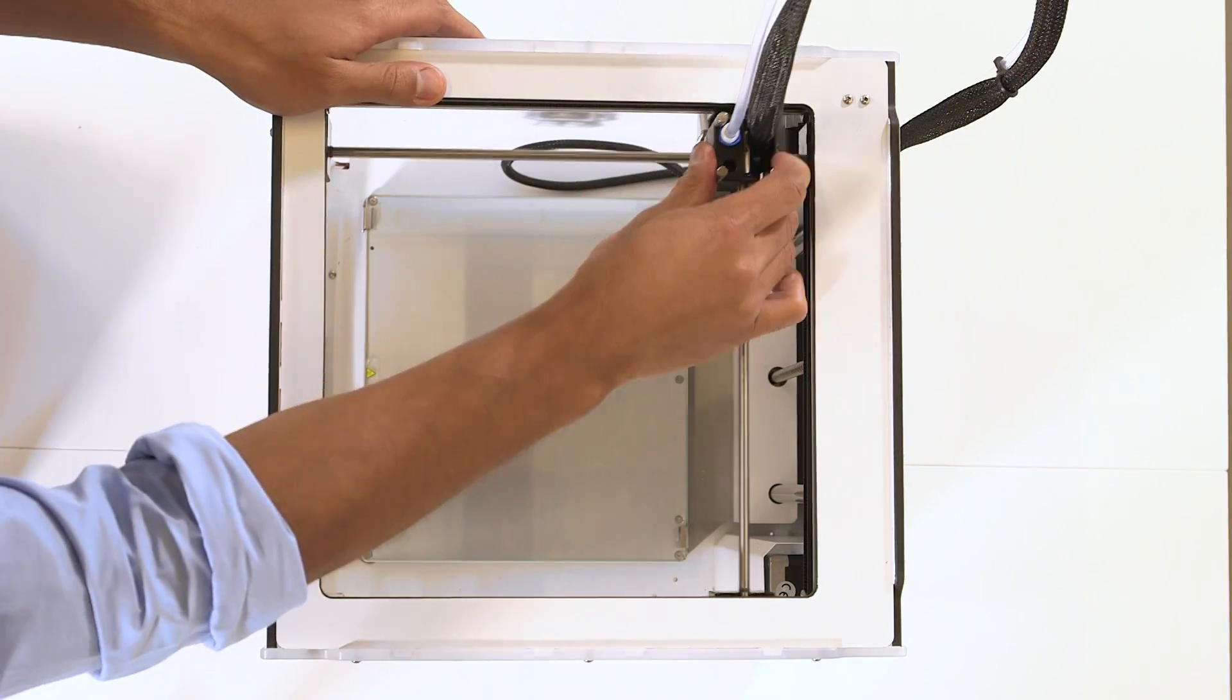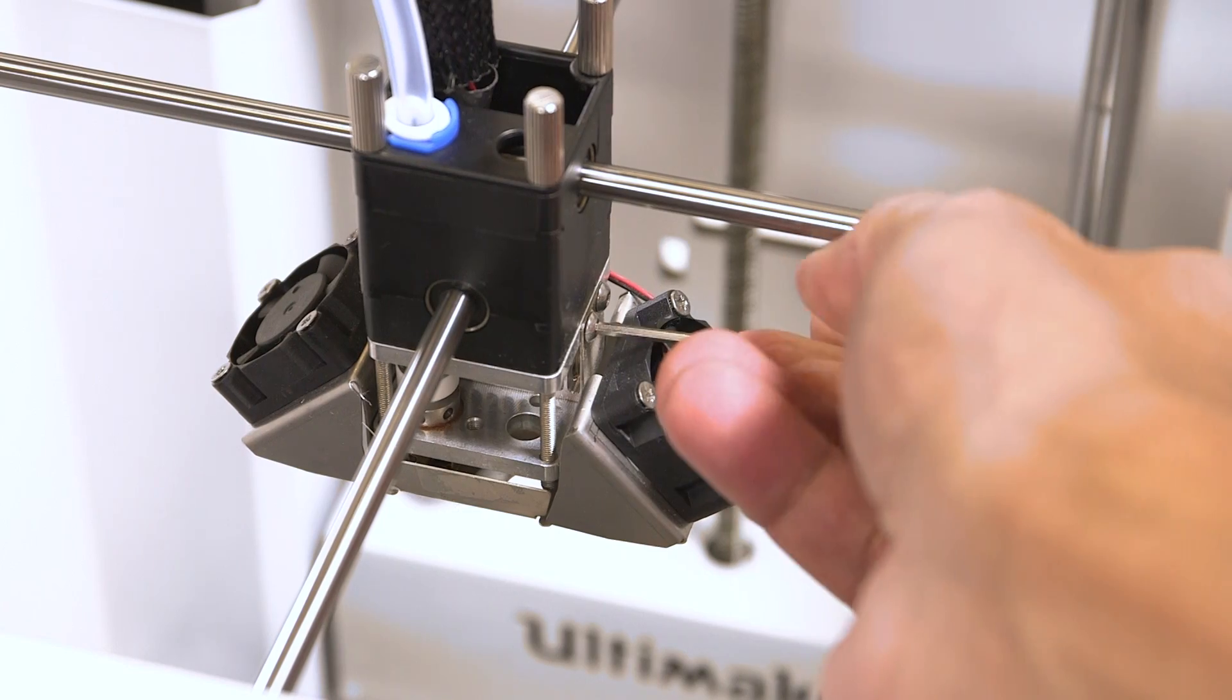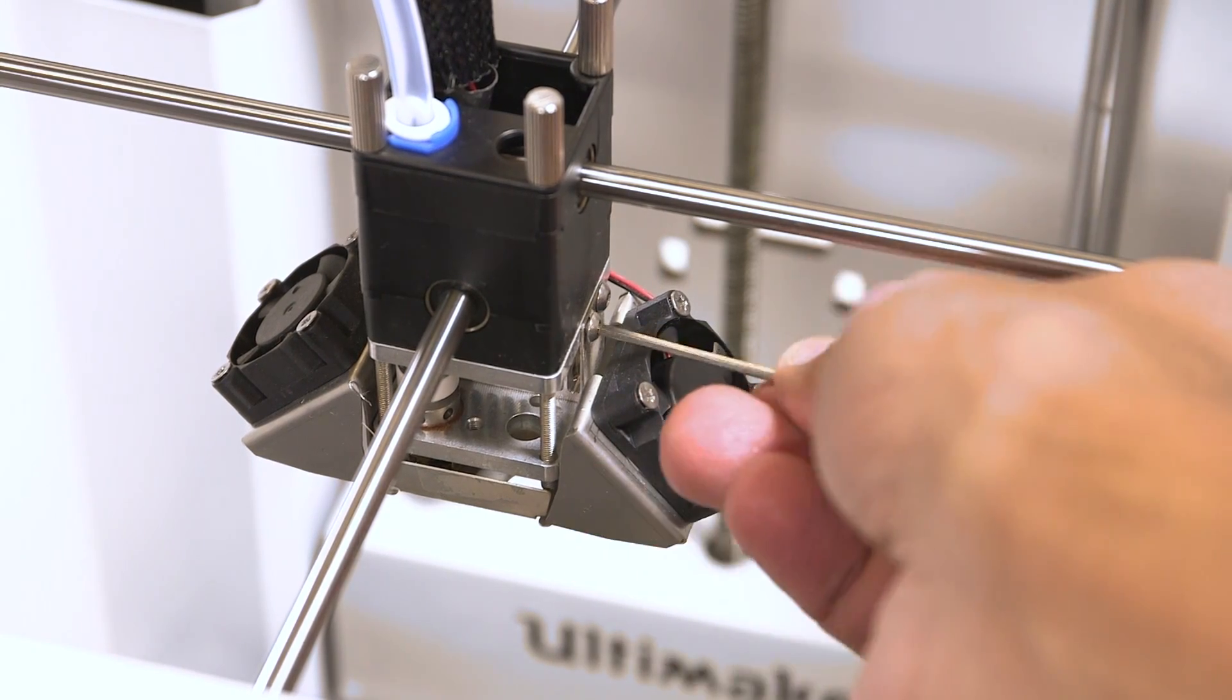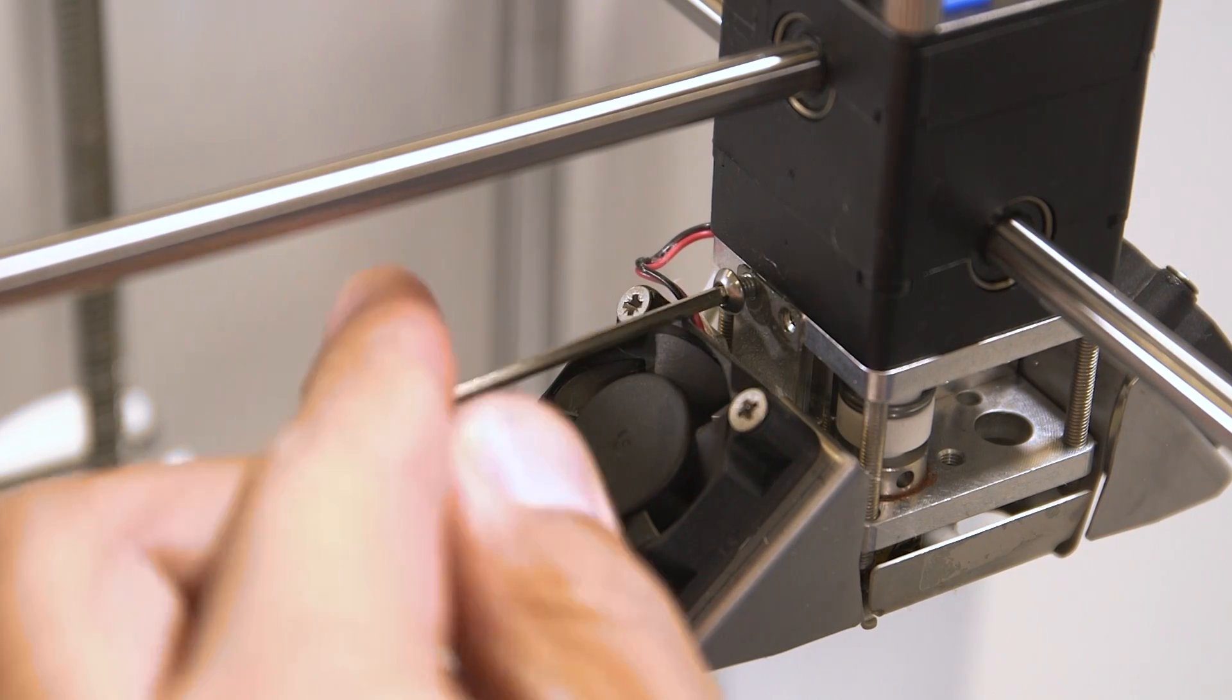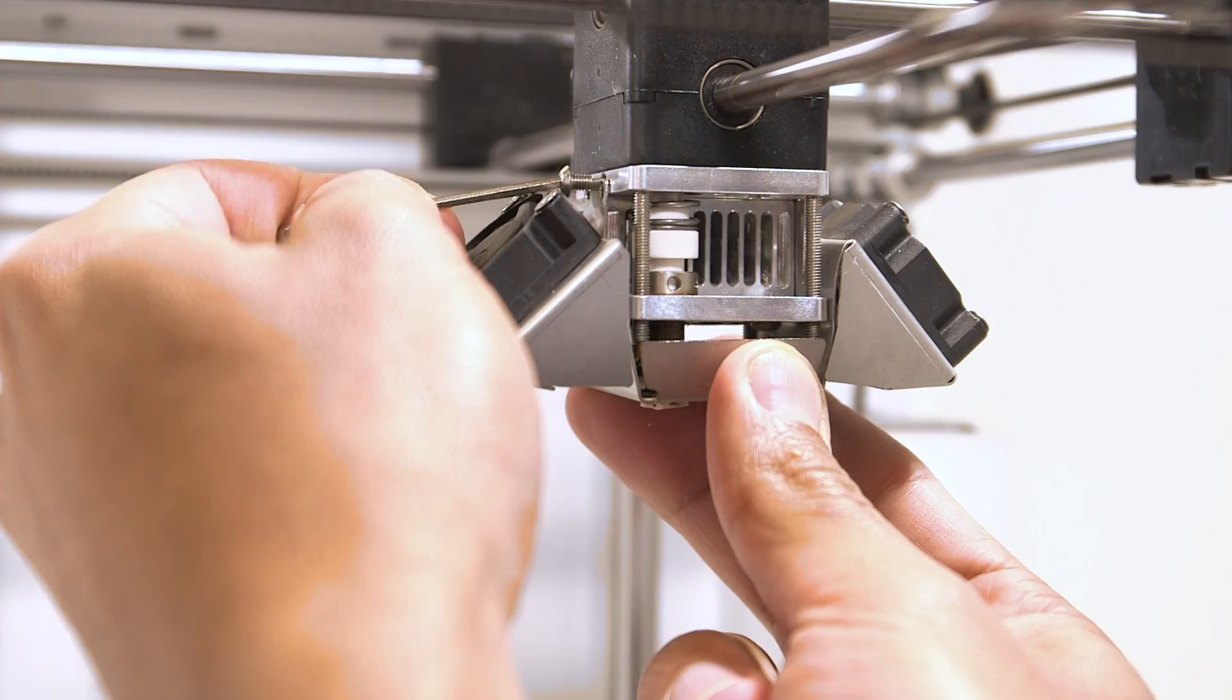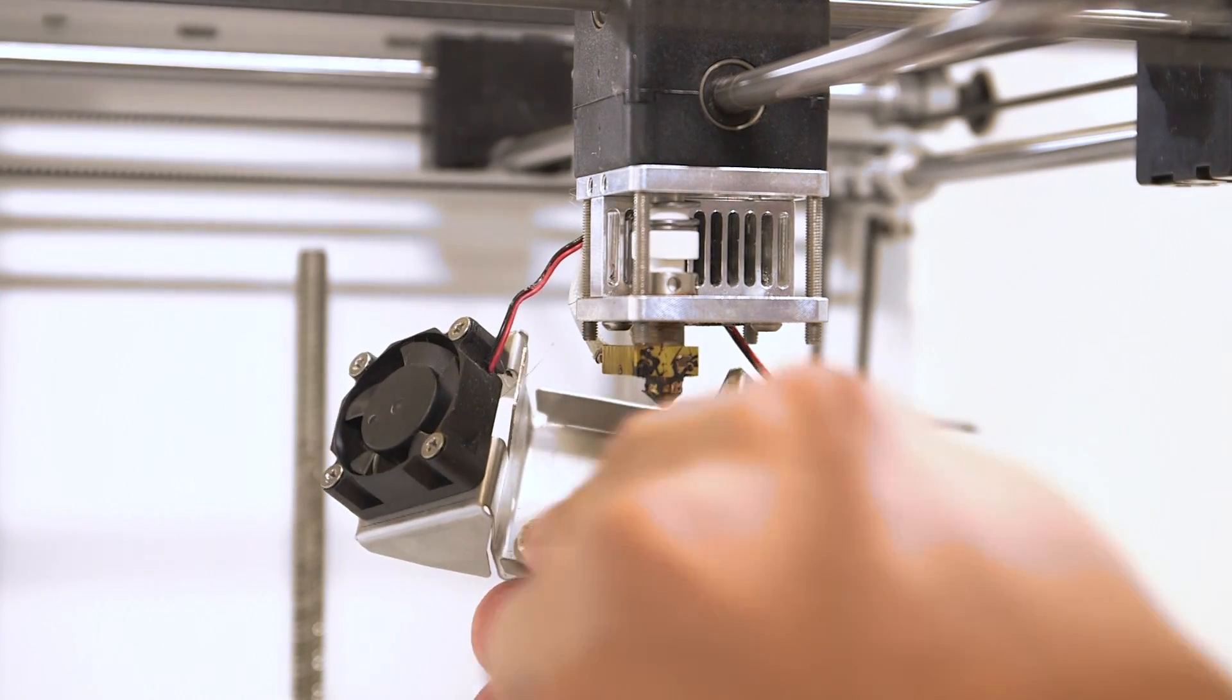Now move the print head to the centre for easy access. Remove the fan bracket by unscrewing the screws on both sides of the hotend. During the rest of the installation, the fan bracket stays attached to the housing by its cables.